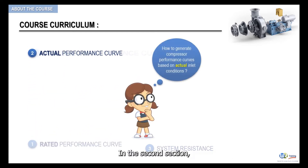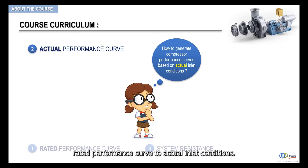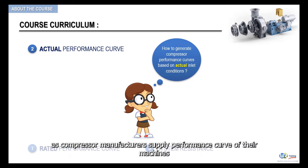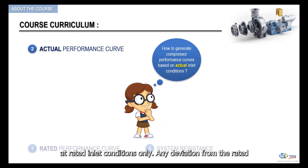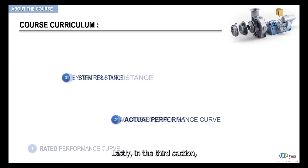In the second section, we present an engineering approach of how to adjust a compressor rated performance curve to actual inlet conditions. This is an important and valuable learning, as compressor manufacturers supply performance curves of their machines at rated inlet conditions only. Any deviation from the rated inlet conditions will render the rated performance data inaccurate.